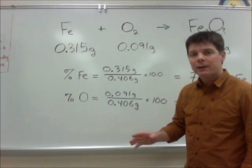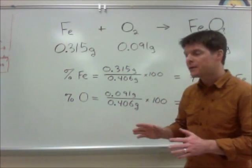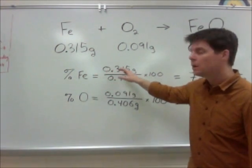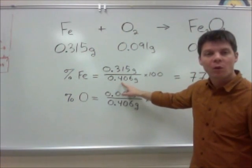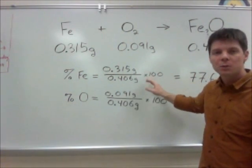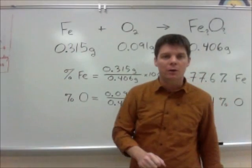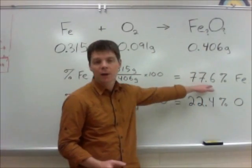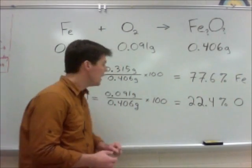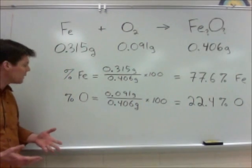To complete our calculation of percent composition, we want to take the mass which is iron, 0.315 grams, and divide that by the total mass of the compound, 0.406 grams. We'll multiply that by 100 in order to calculate the percentage which is iron in this compound. That works out to be 77.6%. We'll do the same thing for the oxygen.